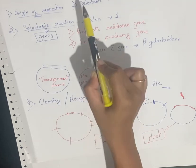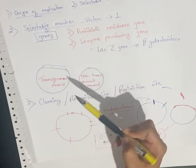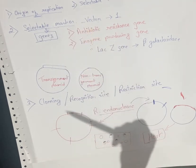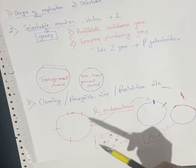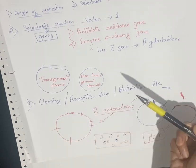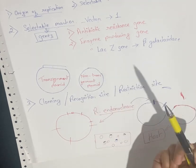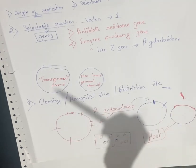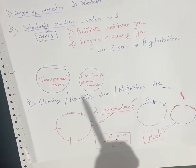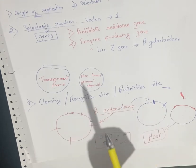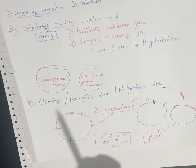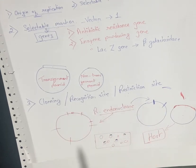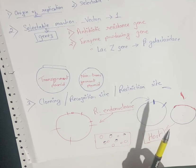This covers the features of vectors. In the next video, I am going to discuss the artificial vector known as PBR322. Thank you, students.